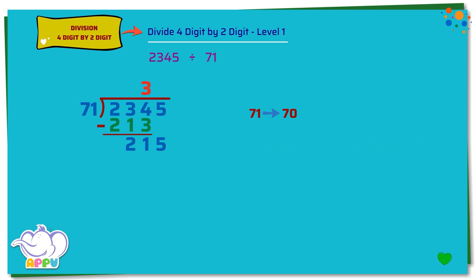We repeat the steps. We divide again. We figure out how many 71s does it take to make 215, or almost 215. To estimate the quotient, we round off 71 to the nearest tens, which is 70.